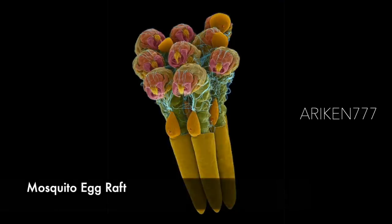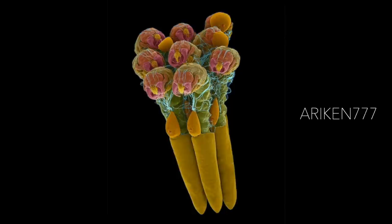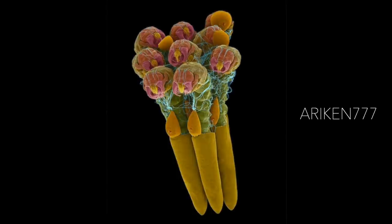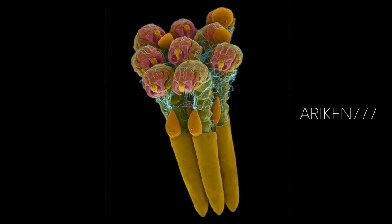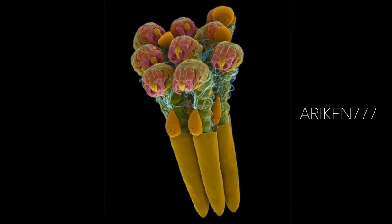Mosquito egg raft with hatching larvae. Culex species of mosquitoes lay their eggs in the form of egg rafts that float in still or stagnant water. The mosquito lays the eggs one at a time, sticking them together in the shape of a raft. An egg raft can contain from 100 to 400 eggs, and larvae will hatch from an opening at the tip of each egg case. The eggs go through larval and pupal stages, feeding on microorganisms such as plankton, before developing into adult mosquitoes.